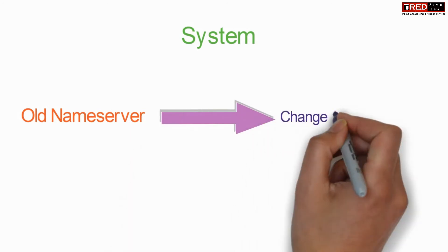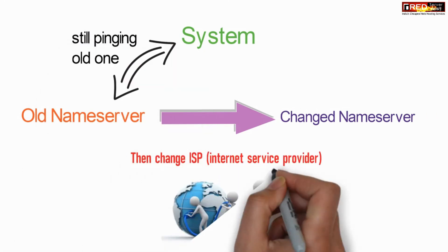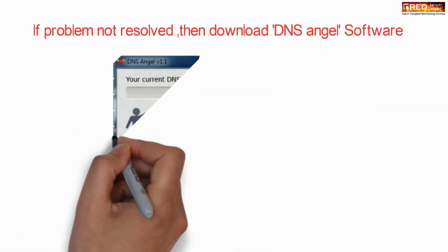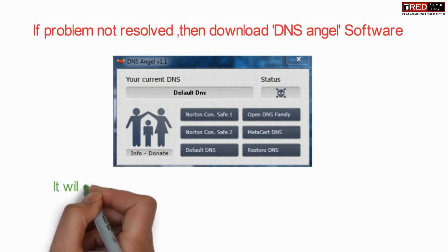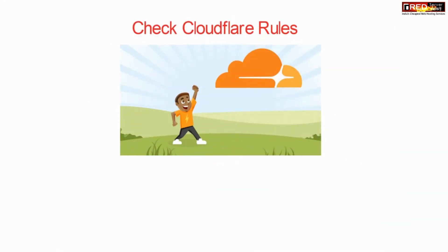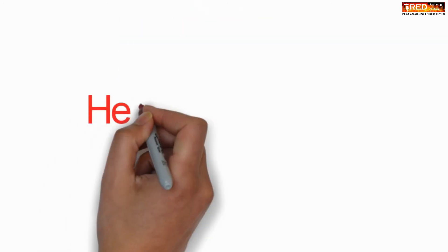If your old name servers are changed to new name servers, then the internet service provider is unaware of this change. In that case, you can simply use DNS Angel — a small application used to flush your DNS to the default one by fetching external name servers. Also check Cloudflare rules; if you find any rule which is behaving as an obstacle, you can remove that.